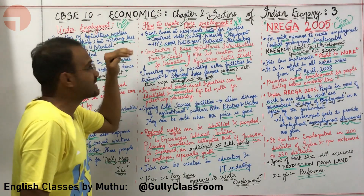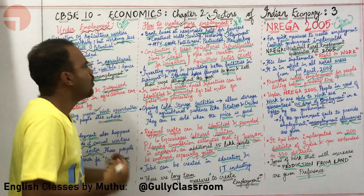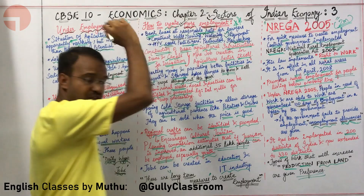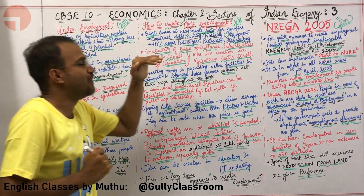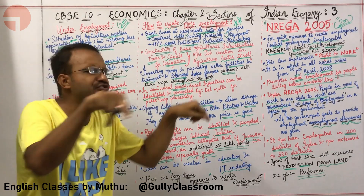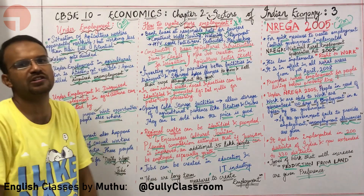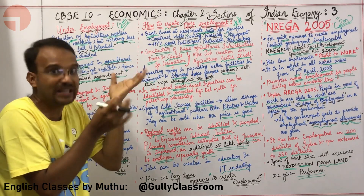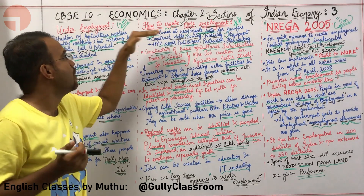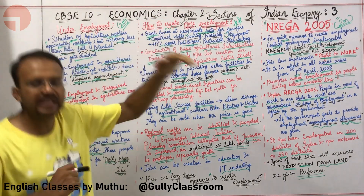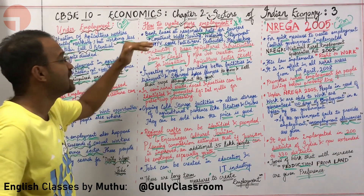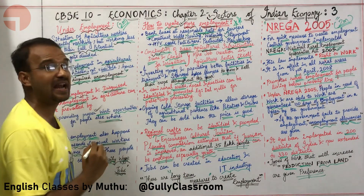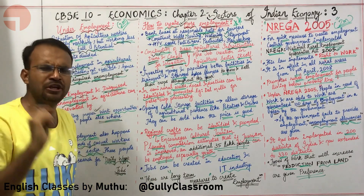To reduce underemployment, we can provide bank loans at reasonable rates for farmers for constructing wells, sowing, watering, buying HYV seeds, pesticides, insecticides, and harvesting equipment. With such facilities, farmers will get more output from the same two hectares of land using better equipment purchased through bank loans at reasonable rates.